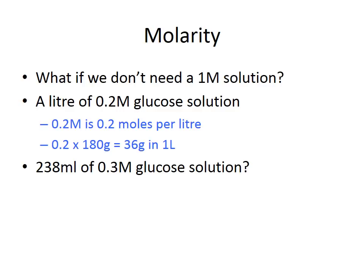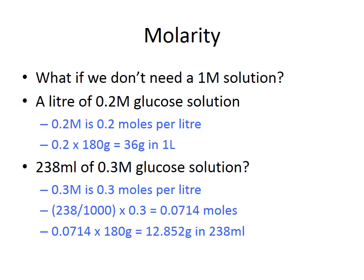In a second example, you need 238 mL of a 0.3 M glucose solution. Since 0.3 M means 0.3 moles per litre, and you only need 238 mL, you create the ratio 238 ÷ 1000, then multiply by the molarity 0.3 — giving 0.0714 moles required. Multiplying 0.0714 by the molecular mass (180) tells you that you need 12.852 g of glucose dissolved in 238 mL to produce a 0.3 M solution.